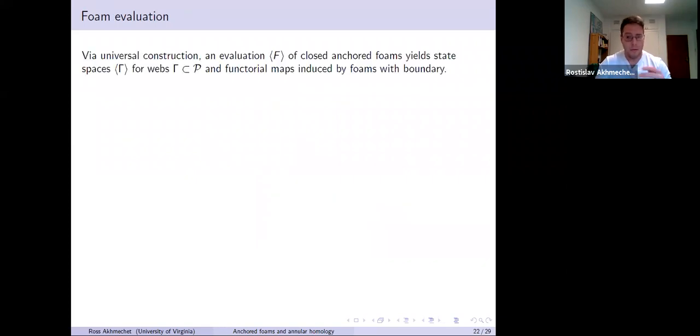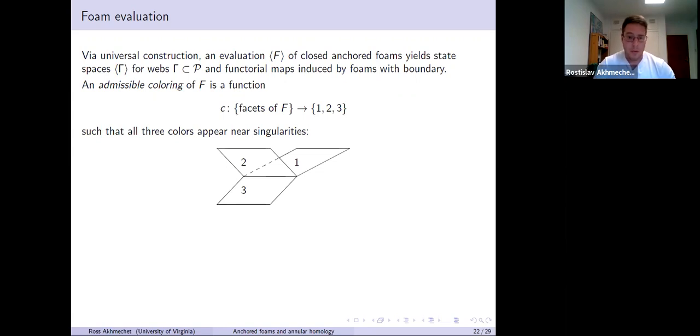As before, if you have an evaluation, you can use this universal construction idea to define state spaces for webs in the punctured plane. You have some web now in the punctured plane, and you look at all the foams that bound your web, say gamma. You have this bilinear form defined via your evaluation or your invariant, and you take the kernel, and you take this big free module mod the kernel. So it comes down to defining some evaluation of foams. As I mentioned before, you get functoriality essentially for free, functoriality under foam cobordisms.